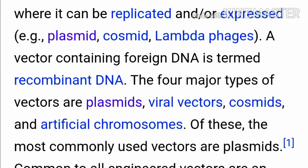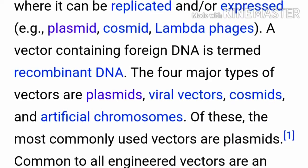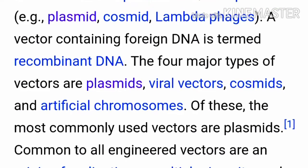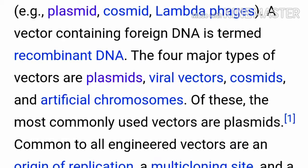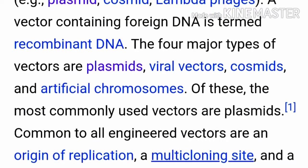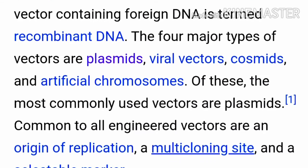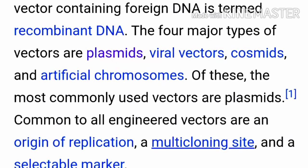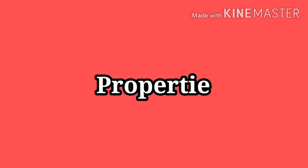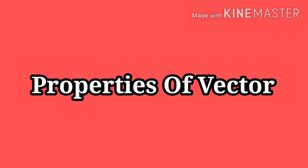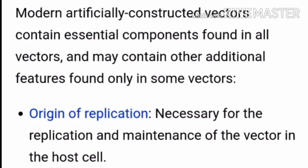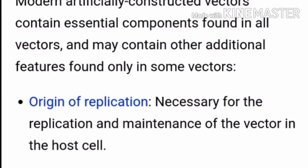The four major types of vector are plasmid vector, viral vector, cosmid vector, and artificial chromosome. Of those, the most commonly used vectors are plasmid vectors. It is common to all engineered vectors to have an origin of replication, a multi-cloning site, and a selectable marker.